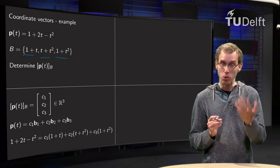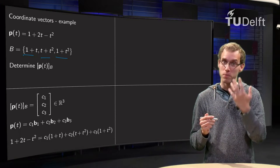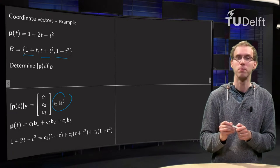That means our coordinate vector will contain three numbers c1, c2, c3. So our coordinate vector [p(t)]_B in the basis B will be some vector in R³.